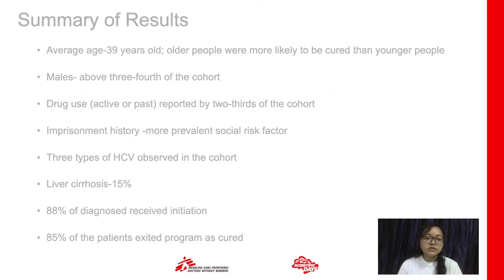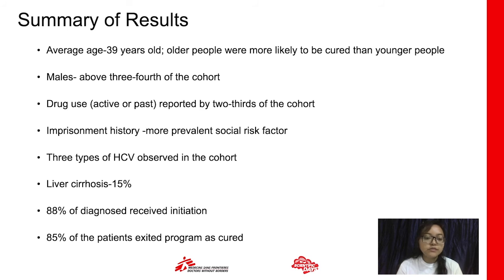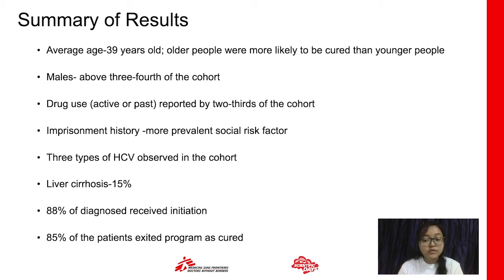To summarize findings: the average cohort age was 39 years; older patients were more likely to be cured. Males were over three-fourths of the cohort. Drug use — active or past — was reported by two-thirds. Imprisonment history was the most prevalent social risk factor. Three hepatitis C genotypes circulated in the cohort. Liver cirrhosis was present in 15%. Treatment was initiated in 88% of those diagnosed, and among those, 85% exited the program as cured — comparable with cohort outcomes in other parts of the world.